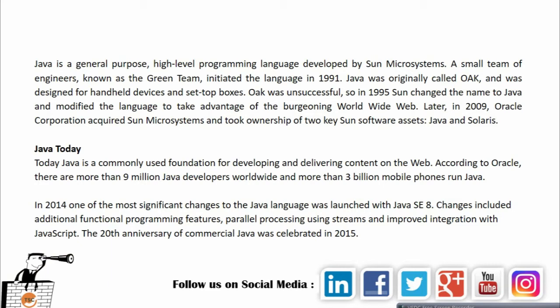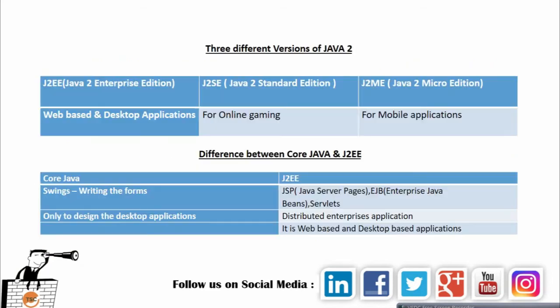According to Oracle, there are more than 9 million Java developers worldwide and more than 3 billion mobile phones run Java. In 2014, one of the most significant changes to the Java language was launched with Java SE 8, including additional functional programming features, parallel processing using streams, and improved integration with JavaScript. The 20th anniversary of commercial Java was celebrated in 2015.